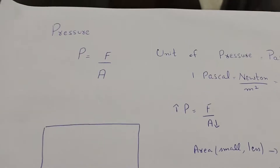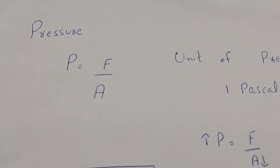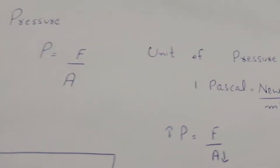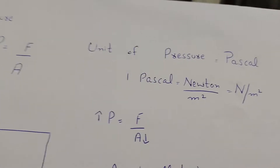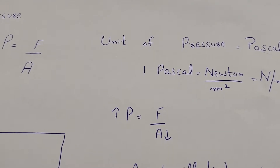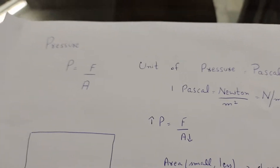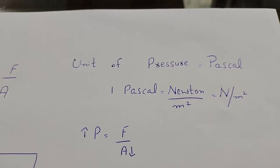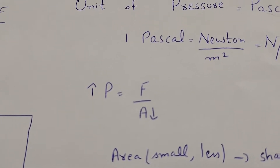Force acting on some certain area is called pressure. The formula is force over area. The unit of force is Newton and the unit of area is meter square — we always take area in meter square or centimeter square. The unit of pressure is called the Pascal, and one Pascal is equal to Newton per meter square.